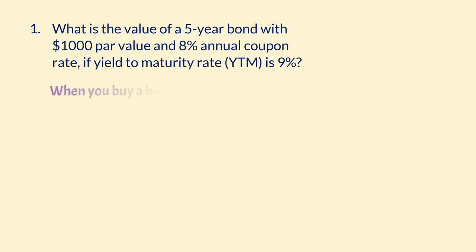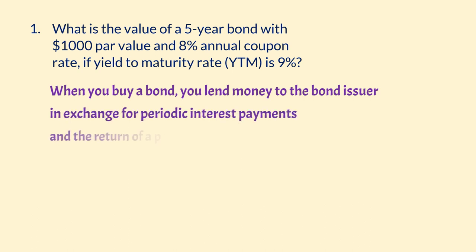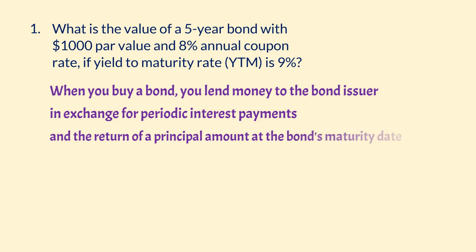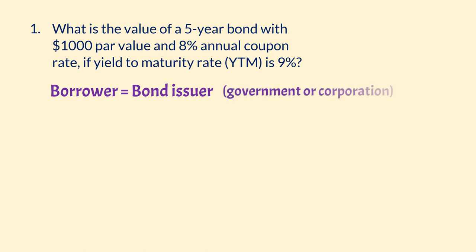When you buy a bond, you're essentially lending money to the bond issuer in exchange for periodic interest payments and the return of a principal amount at the bond's maturity date. The borrower is the bond issuer — for example, government or corporations — and the lender is the bondholder.